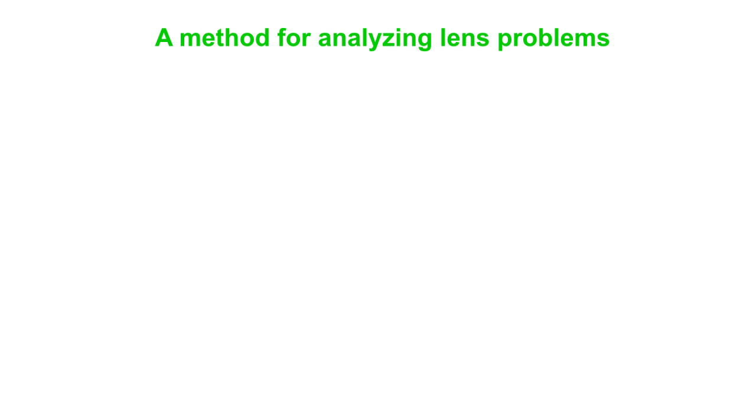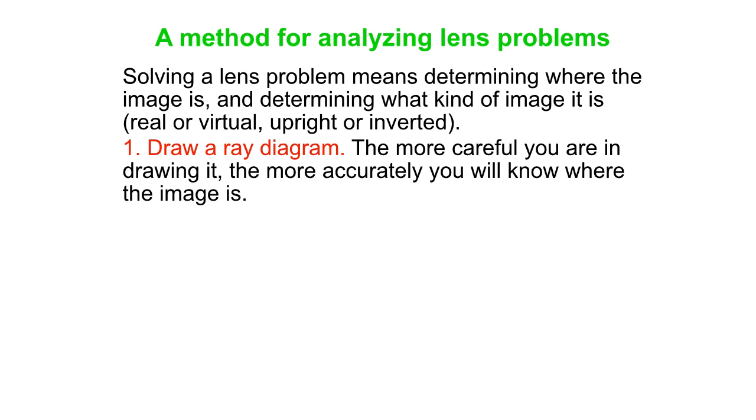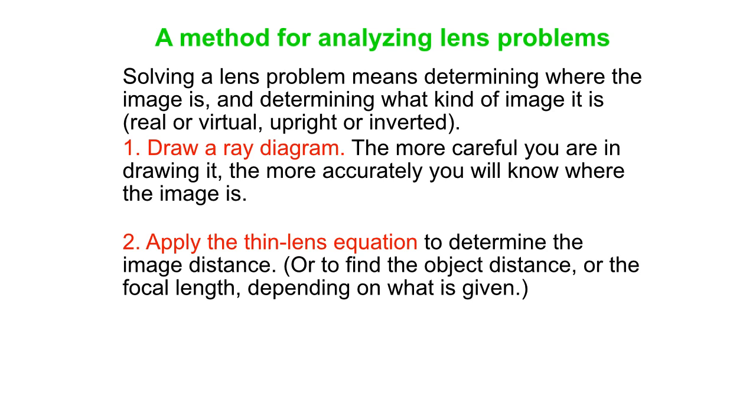Here's our typical method for analyzing lens problems. That means determining where the image is, what the image characteristics are. So we draw a ray diagram, draw it carefully. We apply the thin lens equation, and possibly we might need the magnification equation to help us with that. And make sure these first two steps are consistent with each other. What the ray diagram tells you should be consistent with what the equations tell you.